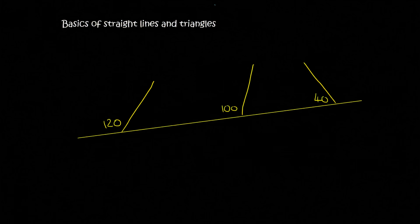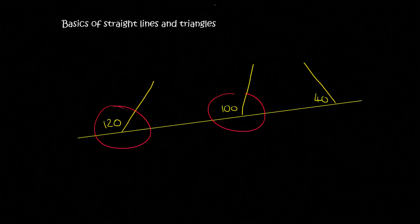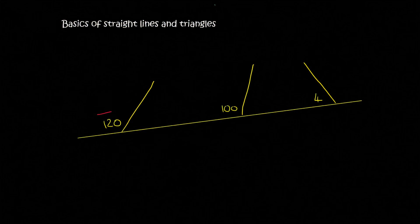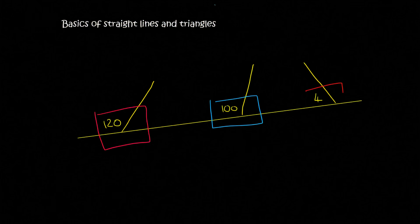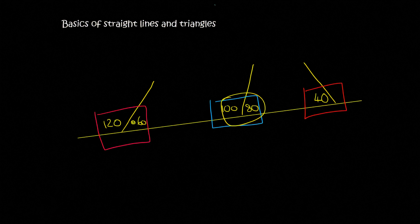Students often ask me: does that mean that all of these must add up to 180? No. What you do is you look — those two must add up to 180, those two must add up to 180, and those two must add up to 180. That's meant to be a 40. So this angle would be 60 degrees because 120 plus 60 is 180. This angle would be 80 degrees because they add up to 180. And then this whole angle over here would be 140 because they add up to 180.